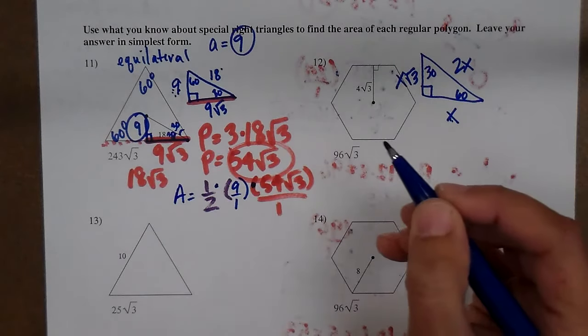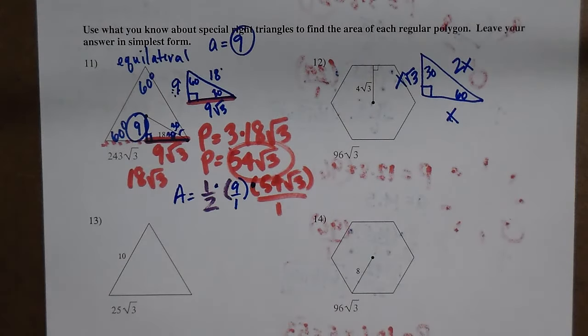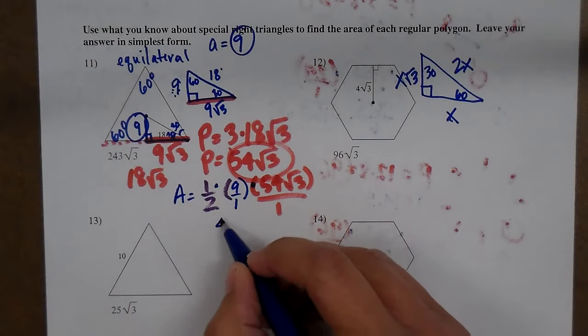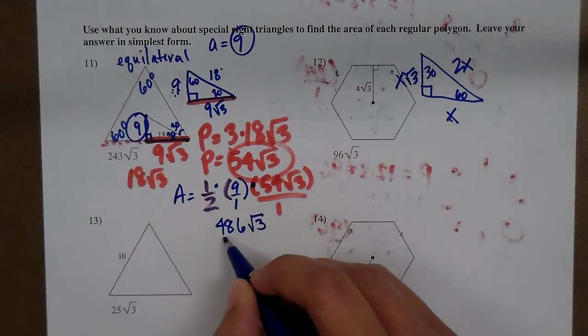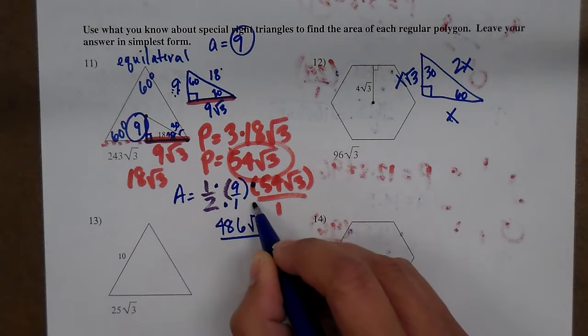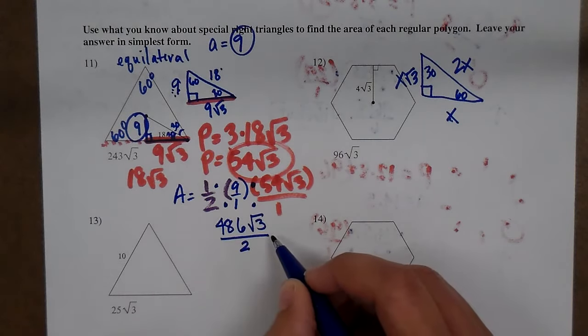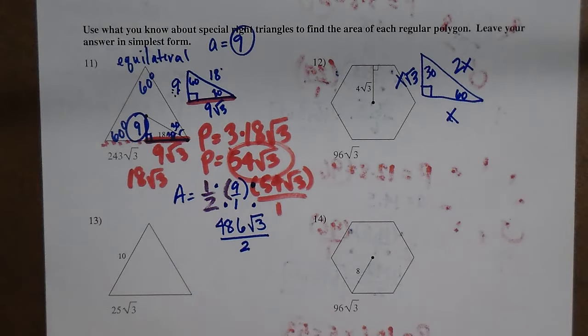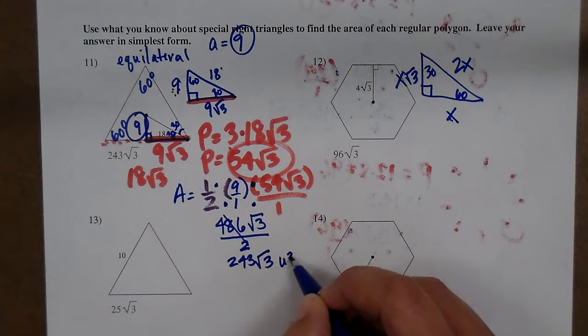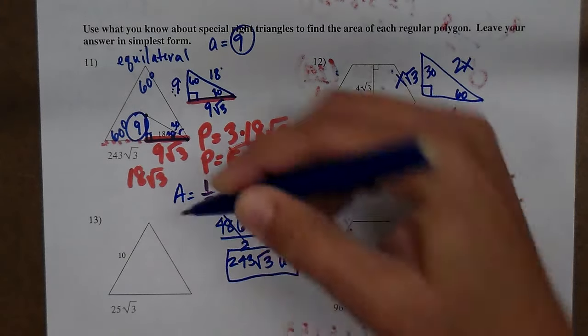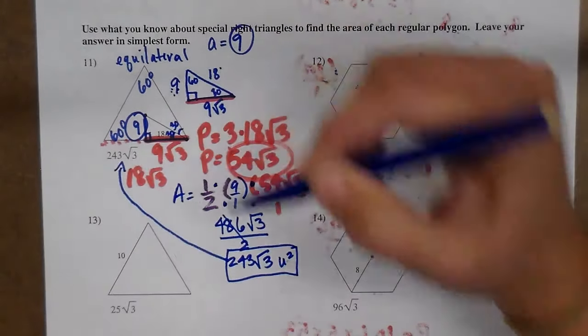I multiply straight across. 1 times 9 times 54 square root of 3. I get 486 square root of 3 on top and 2 on the bottom. If I divide 486 by 2, that comes out to 243 square roots of 3 units squared.